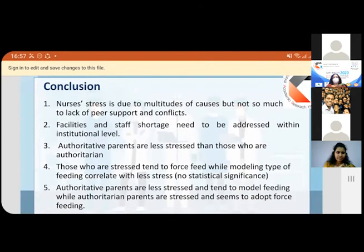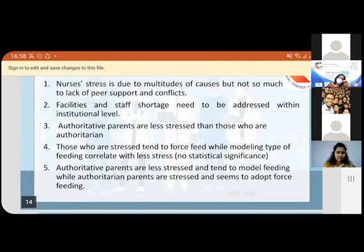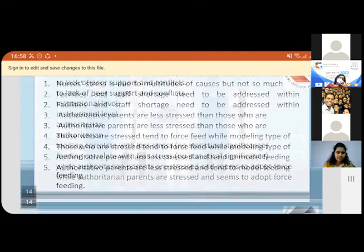Next, I would like to move to the conclusion of my study. There is stress due to multitude causes but not so much due to lack of support and conflict. This is the main point I've identified through my study. I think workload, shortage of staff, and facilities can be addressed at the institutional level to reduce the stress level of nurses. As a significant finding, the nurses show a negative correlation with modeling feeding and authoritative parenting with stress level, and a positive correlation with authoritarian parenting and forceful feeding with stress level. Finally, I would say there is an impact on child-rearing practices and feeding practices because of their stress level. Thank you.